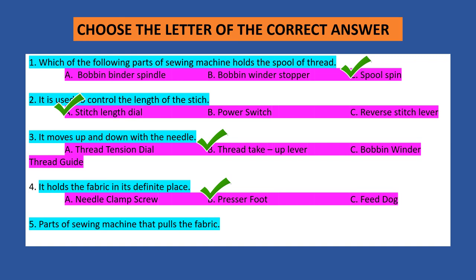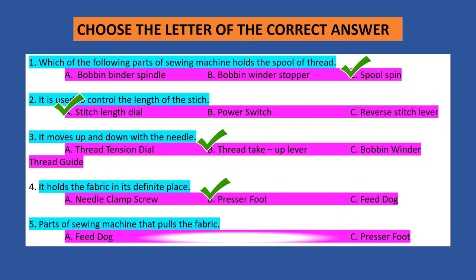Number five: Parts of sewing machine that pulls the fabric. A. Feed dog. B. Needle. C. Presser foot. The answer is letter A — feed dog.